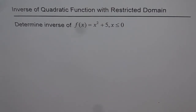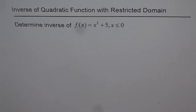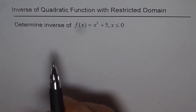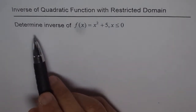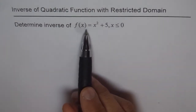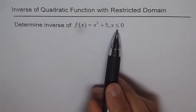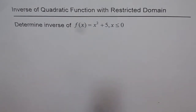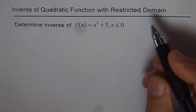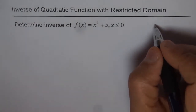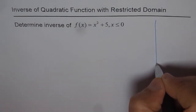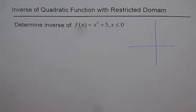Let's try to understand how to find the inverse of a quadratic function with a restricted domain. Here we have an example: determine the inverse of f(x) = x² + 5, where x ≤ 0. To give you an idea of how this function looks and how its inverse should look, let's sketch it.